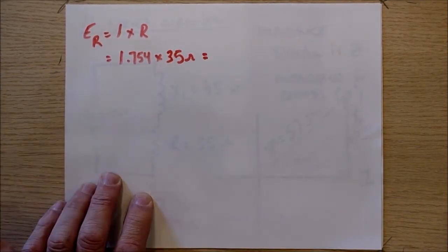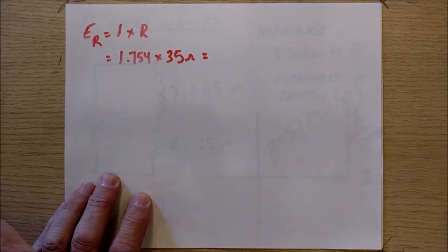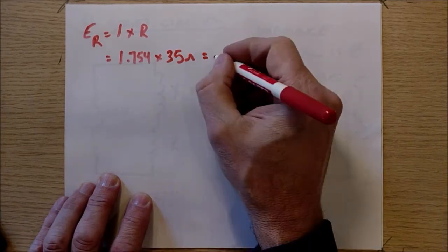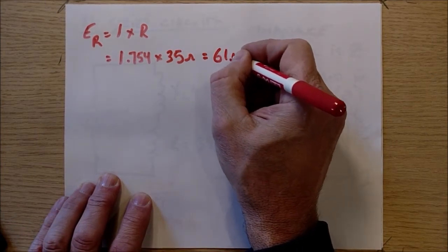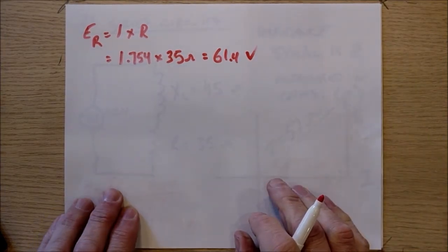And so I can calculate that voltage. I'm going to do it off camera here. 1.754 times 35 comes to 61.4 volts dropping across the resistive part of the circuit.